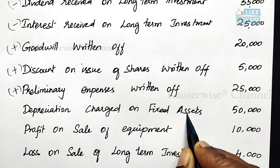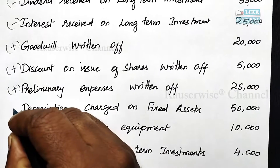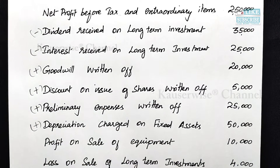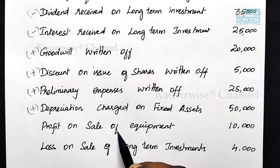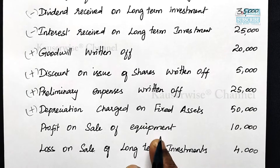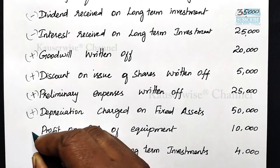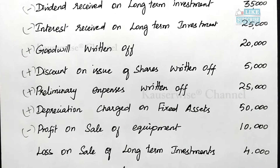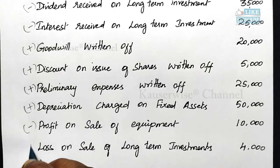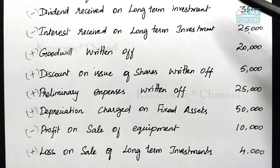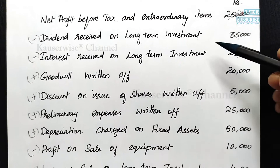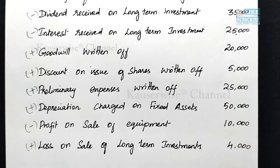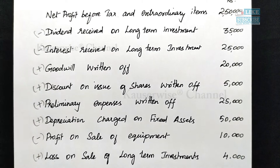Depreciation charged on fixed assets is also a non-cash expense, so this amount needs to be added back. These are the non-operating expenses that need to be added back. Profit on sale of equipment is a non-operating income, so it needs to be subtracted. Loss on sale of long-term investment is a non-operating expense, so this amount needs to be added back. These are all the items identified — non-operating expenses and incomes — and you have to do the proper adjustment to find out operating profit before working capital changes.